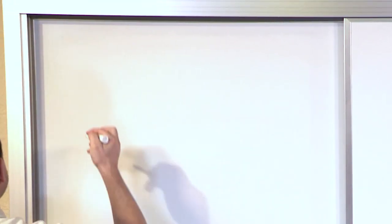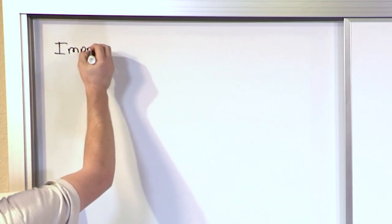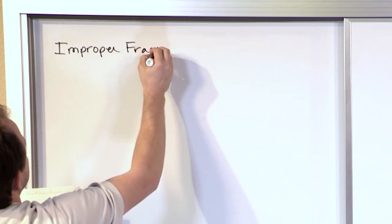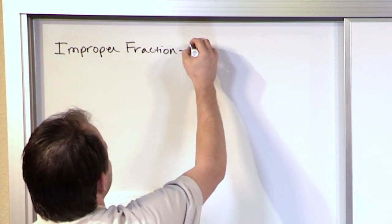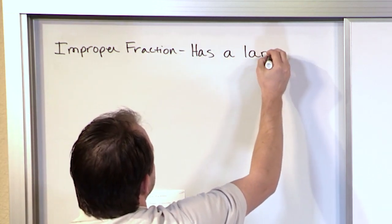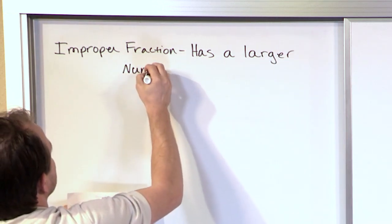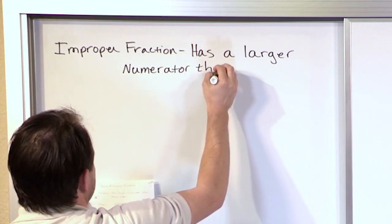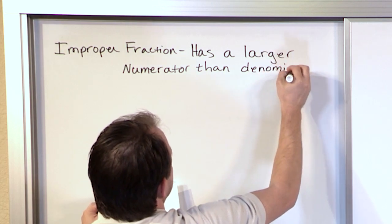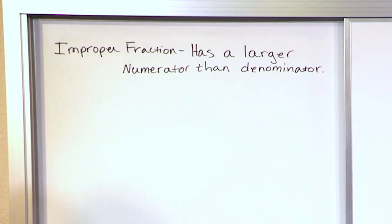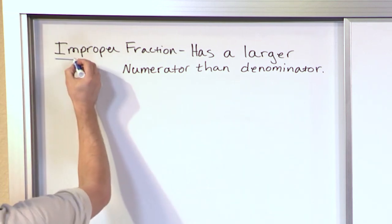What do you think the word improper means? It means something that's not quite right or not quite appropriate. So when you have an improper fraction, it's a fraction that looks a little bit odd. An improper fraction has a larger numerator than denominator. That seems a little bit weird, but let's dive into it and see why improper fractions are kind of neat.